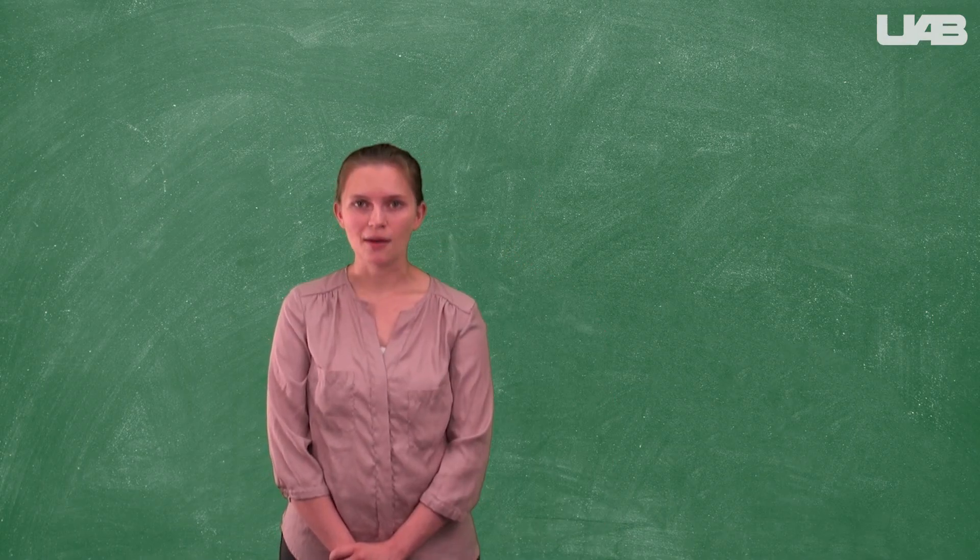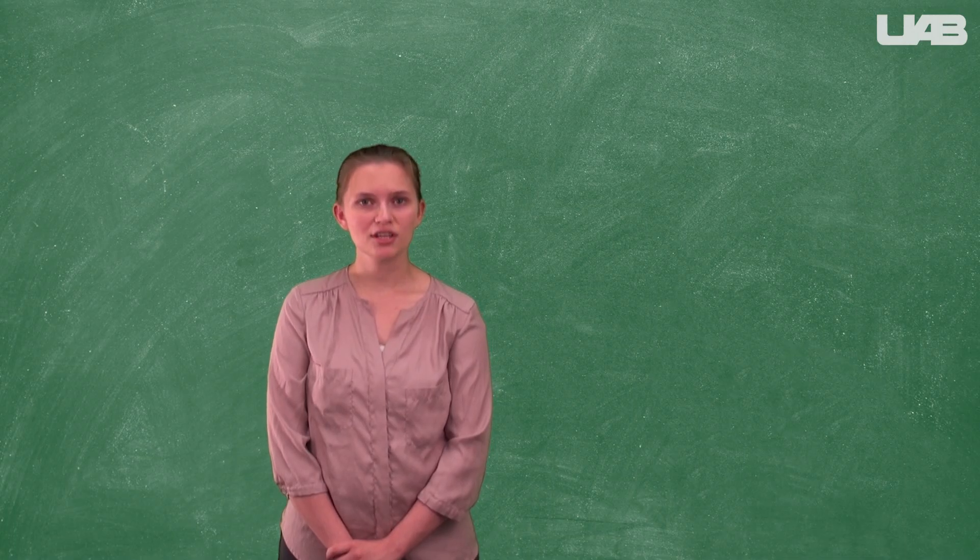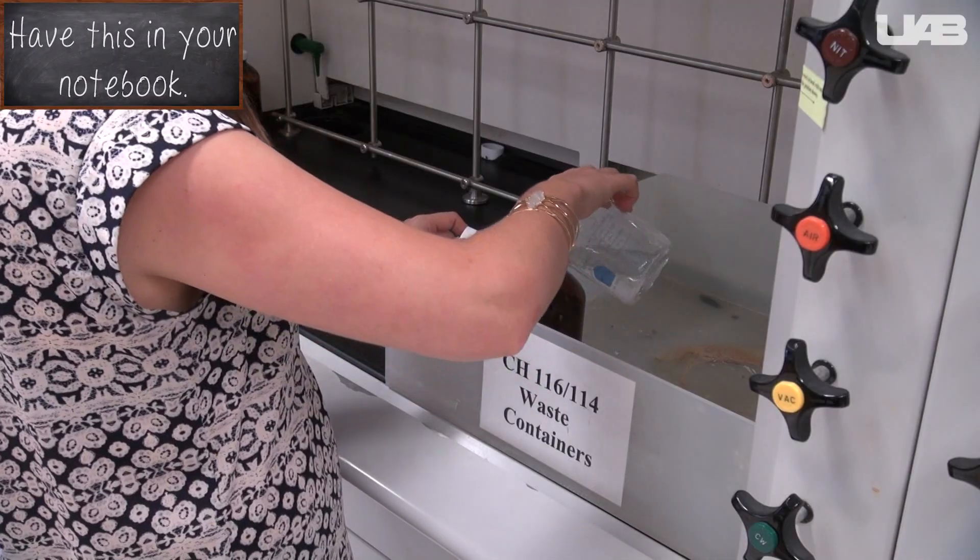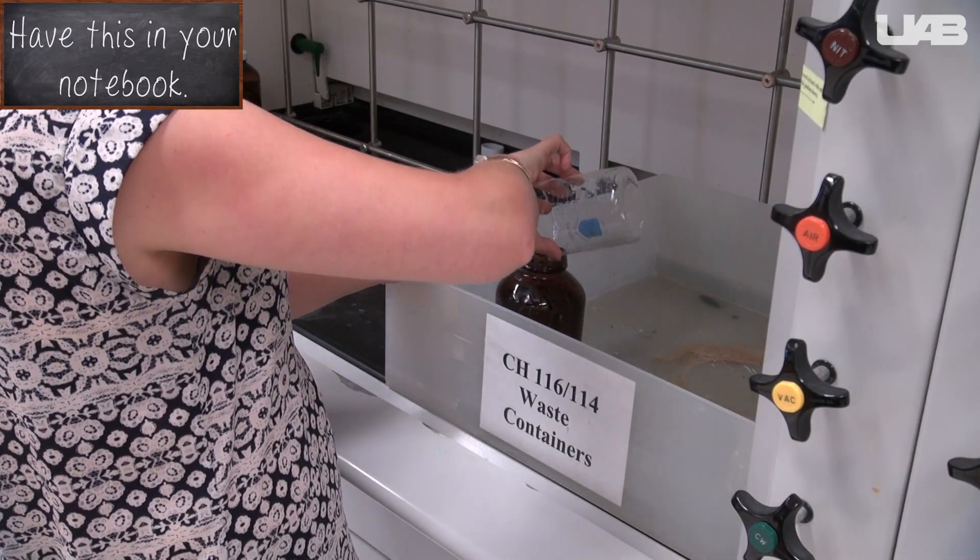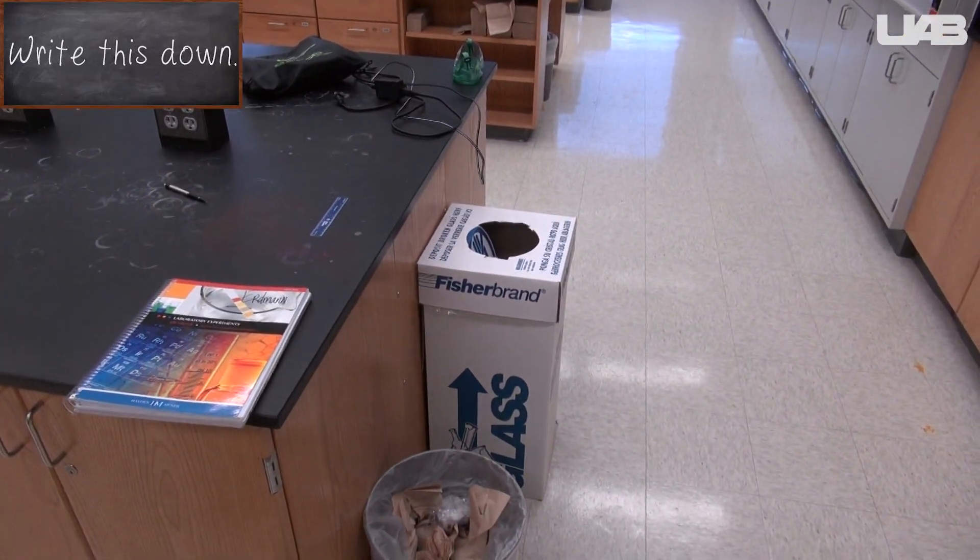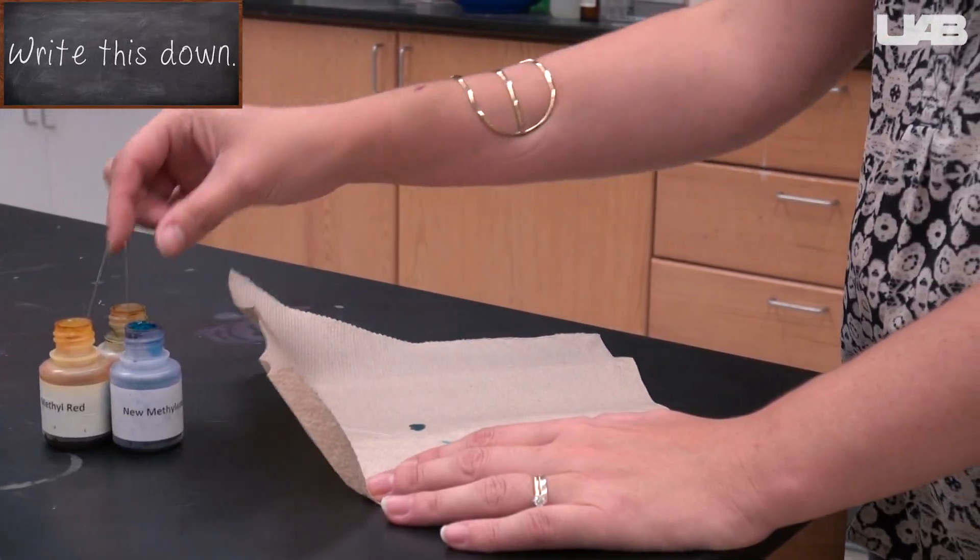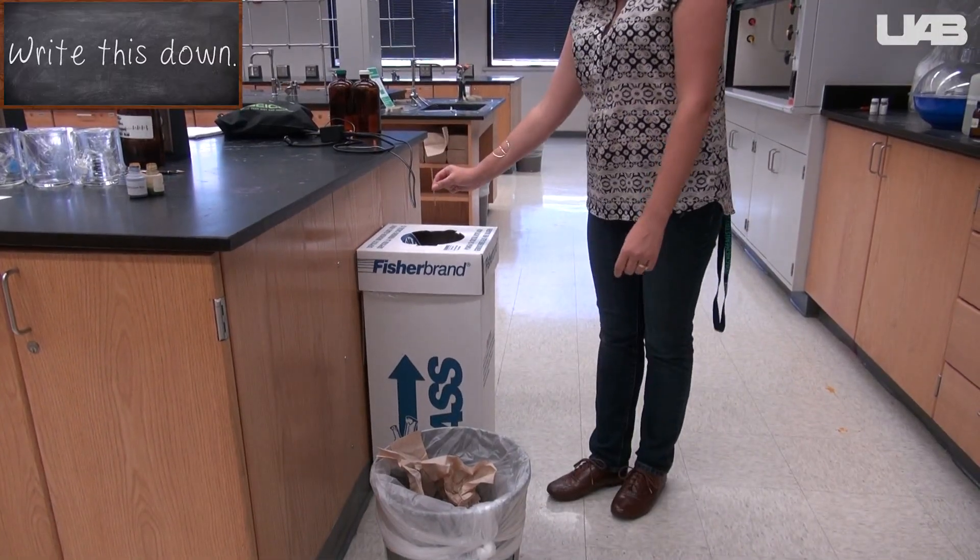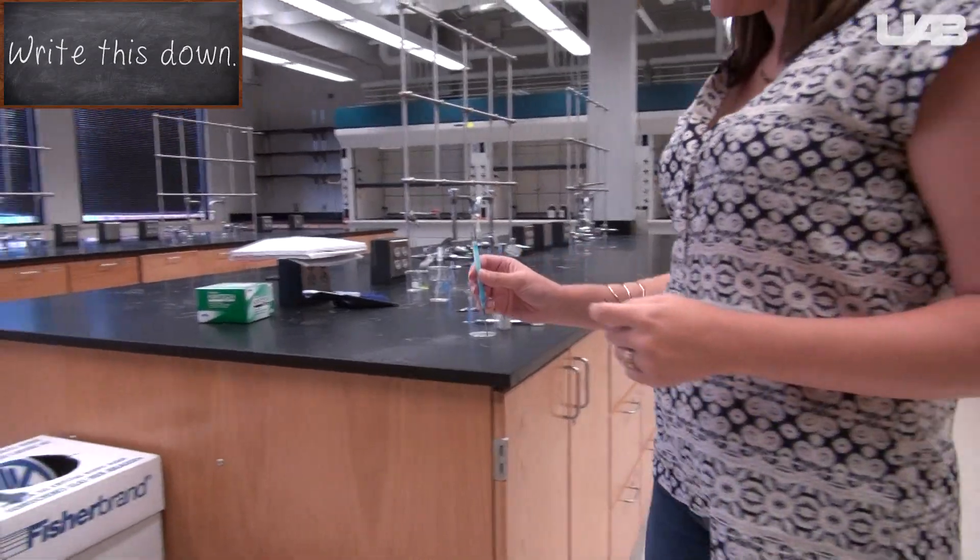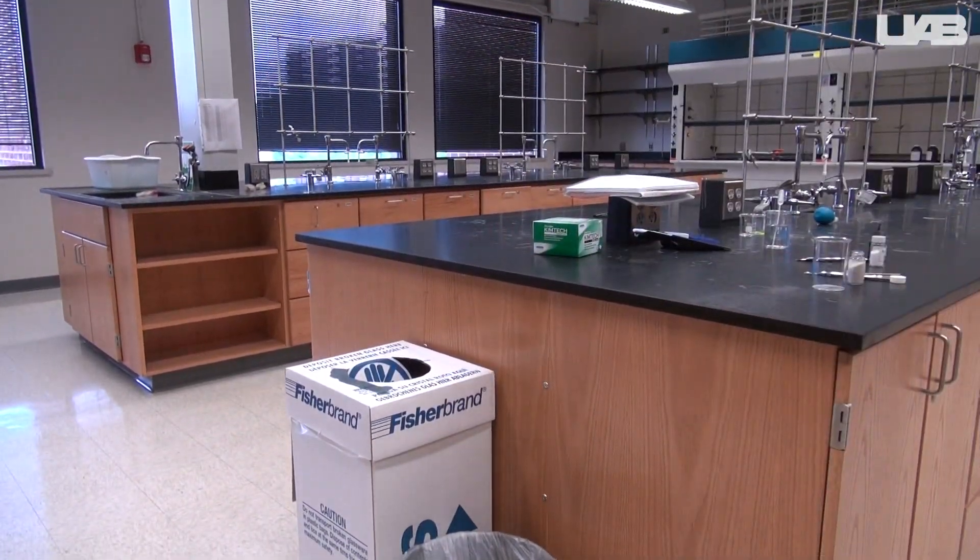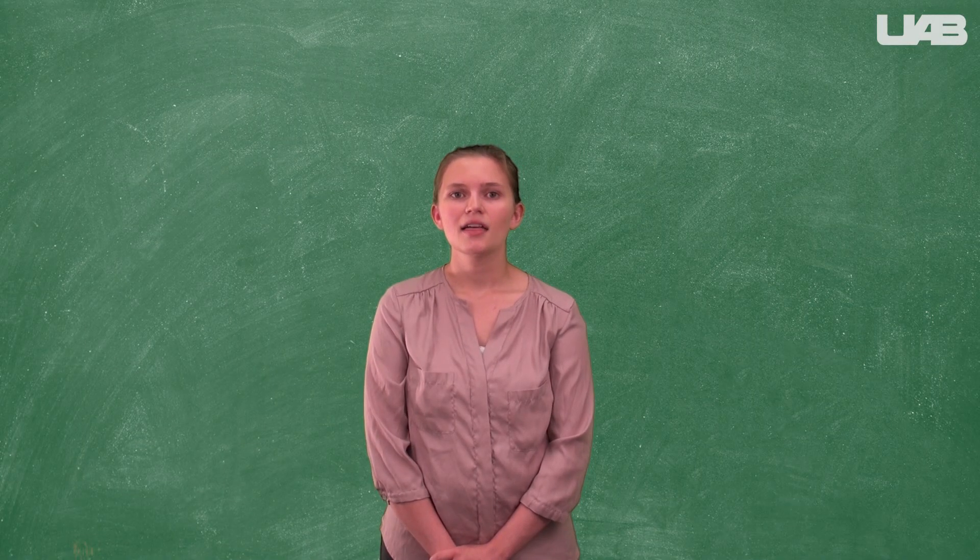When you are finished with the lab and are ready to clean up, make sure that you throw everything away in the right places. The solvents used today need to be poured into the waste containers located in the fume hood. Solid waste, like the TLC plates, can be thrown away in the regular trash can. To dispose of the capillary tubes, blot out the excess dye onto a paper towel, then throw them away in the glass disposal. The micro columns should be placed in the glass disposal. You don't need to clean everything out of the inside, just throw it away. That's all for this week's technique video and I will see you all next week.